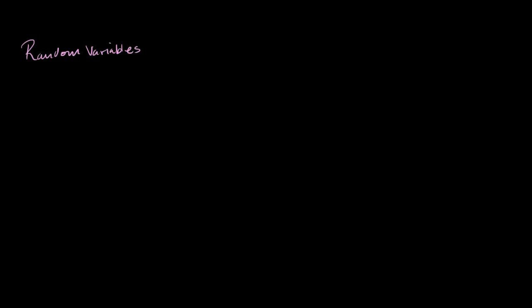We already know a little bit about random variables. What we're going to see in this video is that random variables come in two varieties: discrete random variables and continuous random variables.